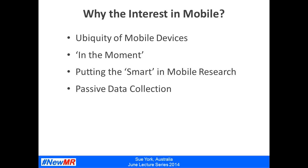Another key driver of interest in mobile research is passive data collection. Mobile devices — smartphones and tablets — can collect a wide variety of information as the research participant goes about their normal everyday life. In many cases this is based on the participant downloading an app onto their device. For example, a location tracking app can use the phone's GPS receiver to record where the participant is, giving us a detailed and accurate record of their journey to and from work. Passive data is very attractive to marketers and researchers because we can collect large amounts of detailed data about what people do without burdening them with research tasks, and without introducing biases from asking participants to decide what to report.